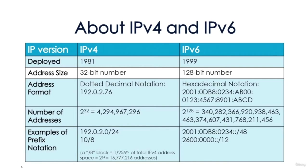IPv4 uses 32-bit source and destination addresses, usually shown in dotted quad format, such as 192.168.2.4. A 32-bit address field allows 2 to the 32nd, or nearly 4.3 billion addresses.